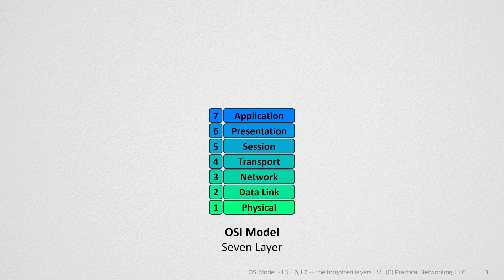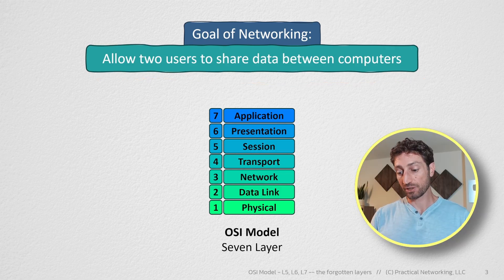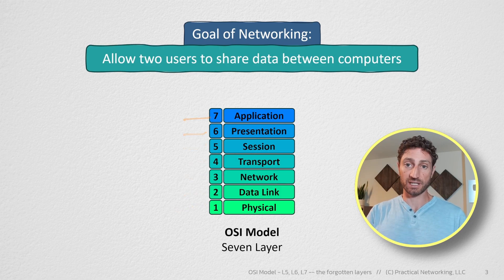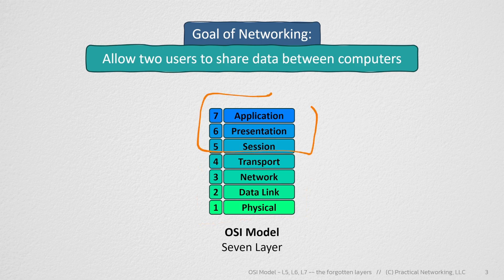The OSI model consists of seven different layers that each have a specific responsibility, which contribute to the overall goal of networking — which is to allow two users to use computers to share data between each other. If each layer is doing its responsibility successfully, then the goal of networking is obtained, which means the internet works. There are many resources that unpack layers 1, 2, 3, and 4, but very few that really pick apart layers 5, 6, and 7.